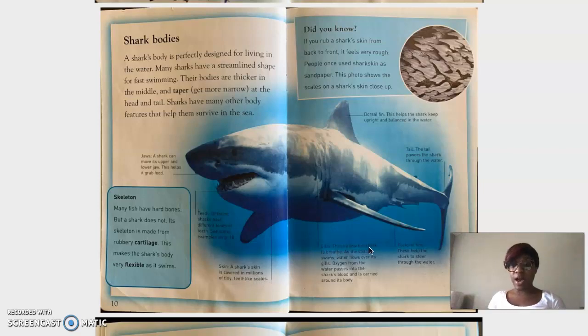Gills. This allows the shark to breathe. As the shark swims, water flows over its gills. Oxygen from the water passes into the shark's blood and is carried around its body. Wow. So these gills help the sharks to breathe. Water floats over its gills and oxygen from the water passes into the shark's blood and is carried around their whole body. So that helps them to breathe good on the water.